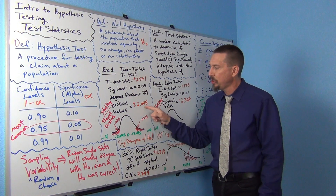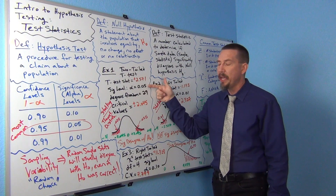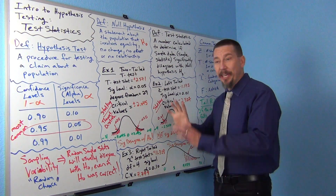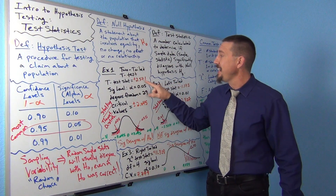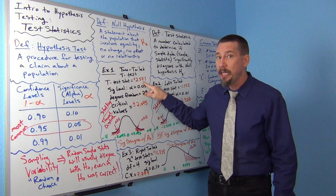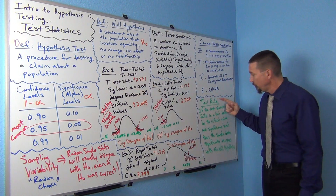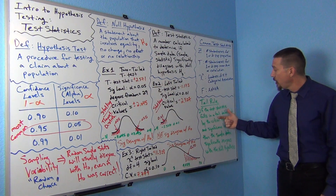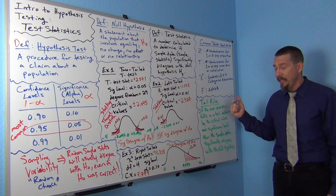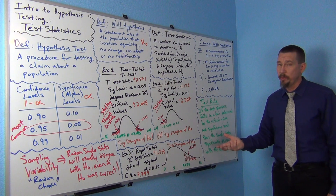The tail begins at the critical value and the percentage in the tail is determined by the significance level. In this case there were two tails. Now here's the big question: does the test statistic positive 2.571 fall in the tail? If the test statistic falls in the tail determined by the critical value and the significance level, then the sample data significantly disagrees with the null hypothesis.